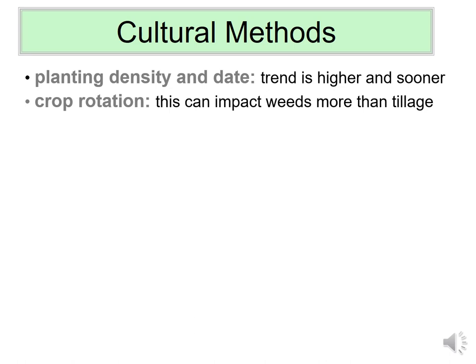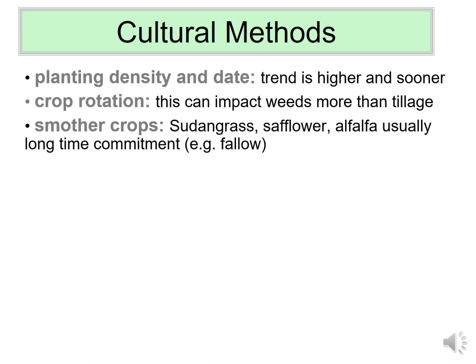Crop rotation — rotating from one cropping system to a different one — is important. The more different the systems are, the more you break up those weed-crop associations. Rotating allows you to bring in different management tools unavailable in the previous system. The weed species in your seed bank remember your past management practices, so rotating to different cropping systems allows different management approaches. Smother crops are usually a season-long commitment. They are extremely competitive or have unique characteristics that suppress weeds, and other tools can be used to kill weeds within them.